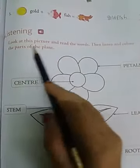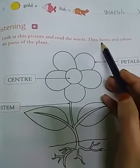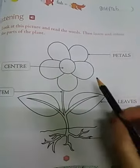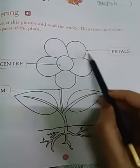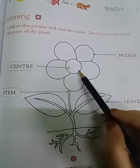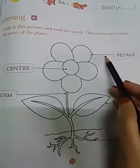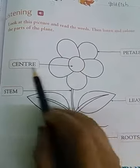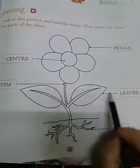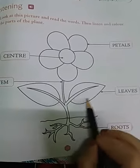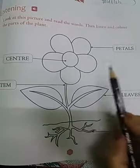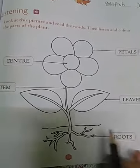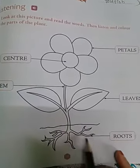This bit is the listening part. Look at this picture and read the words, then listen and color the parts of the plant. The petals you have to color any color — red or pink. In the center part you can use brown or yellow. In the stem part use brown color, and in the leaves use green color. Use only crayons or color pencils. The roots color in brown.